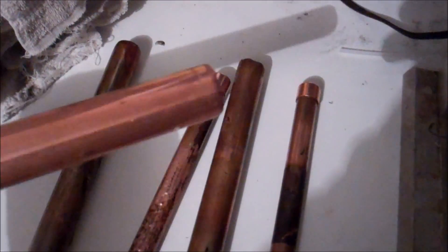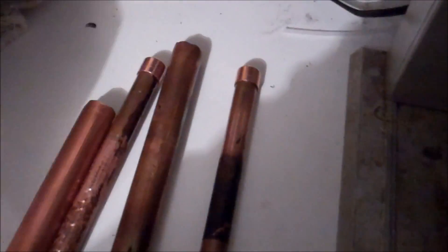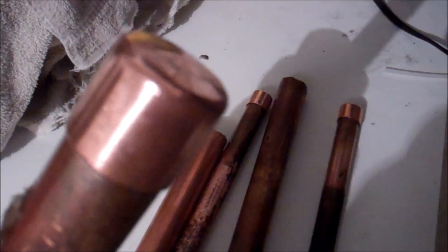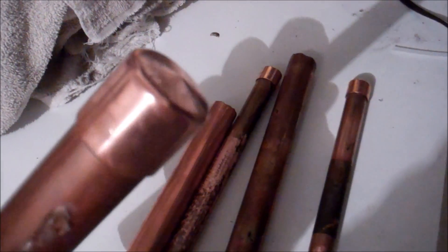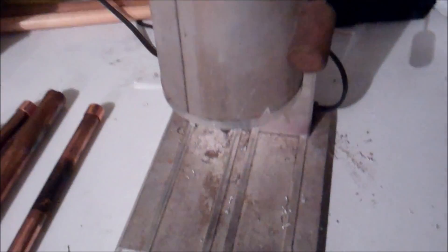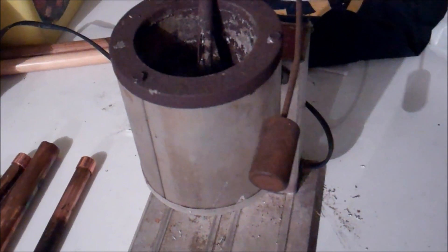Basically what I did was I started out with a piece of copper tubing, this is 3 quarter inch, and I just put one of these end caps on, these copper caps, and then I used my trusty Lee lead melting pot to pour molten lead inside of it.